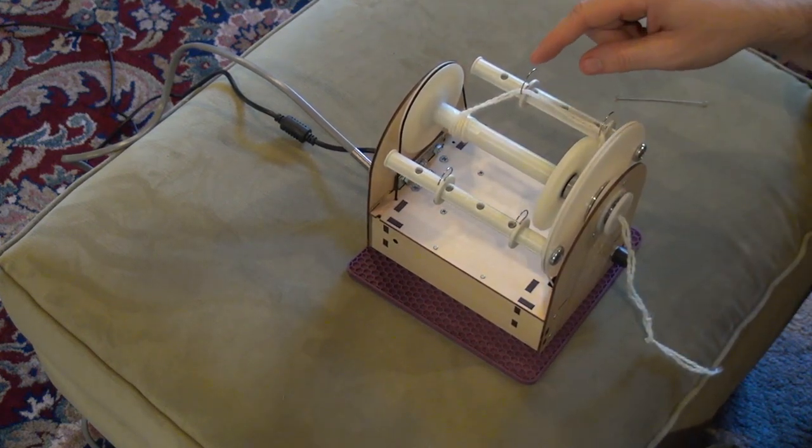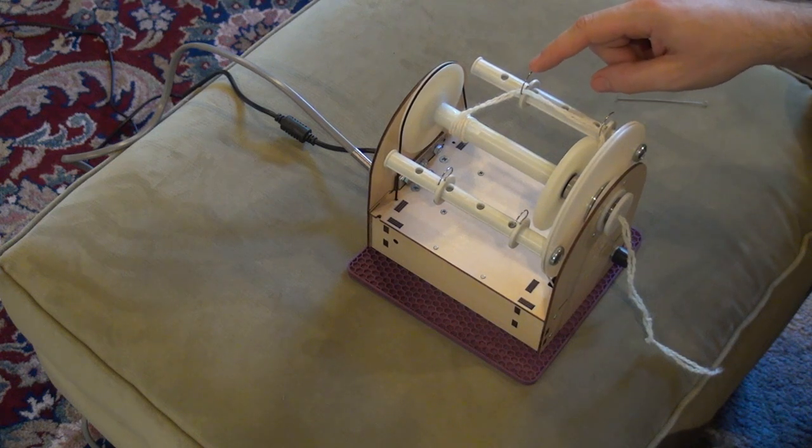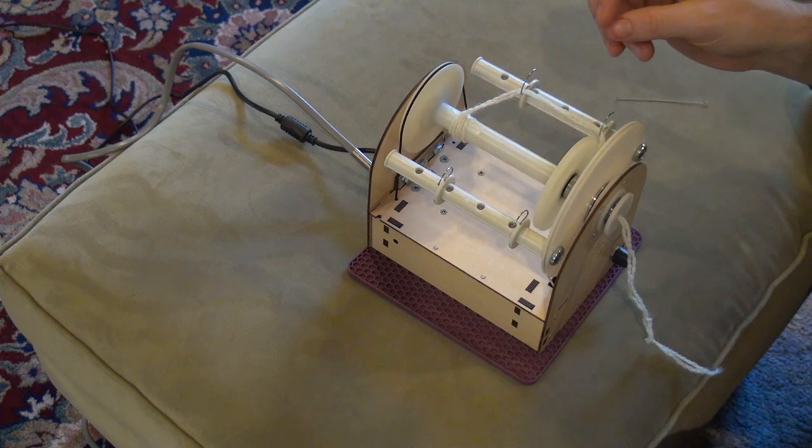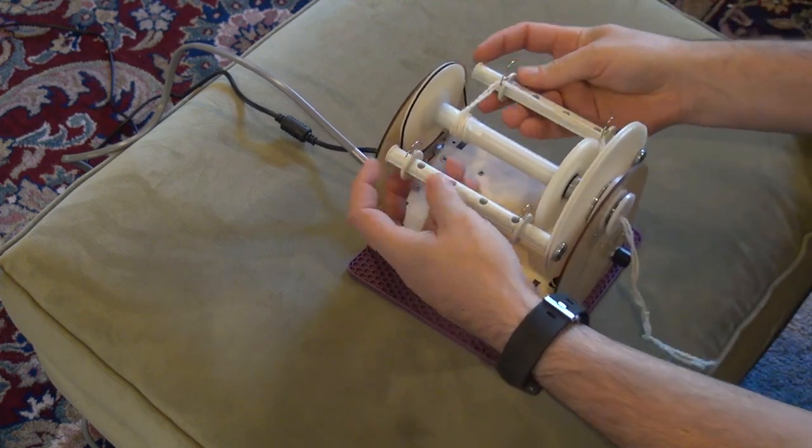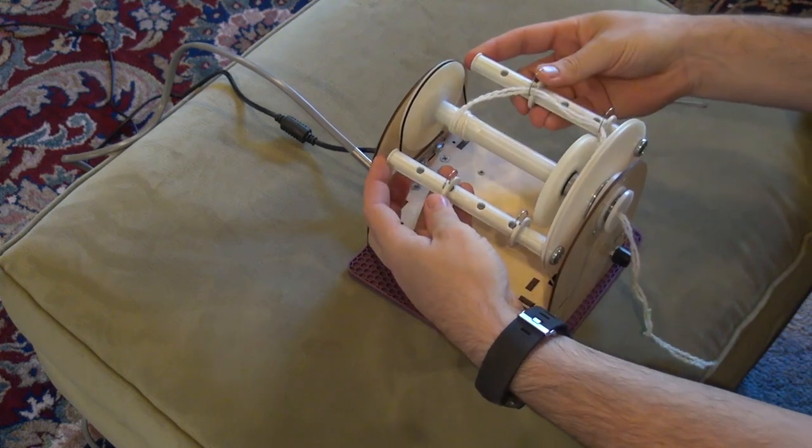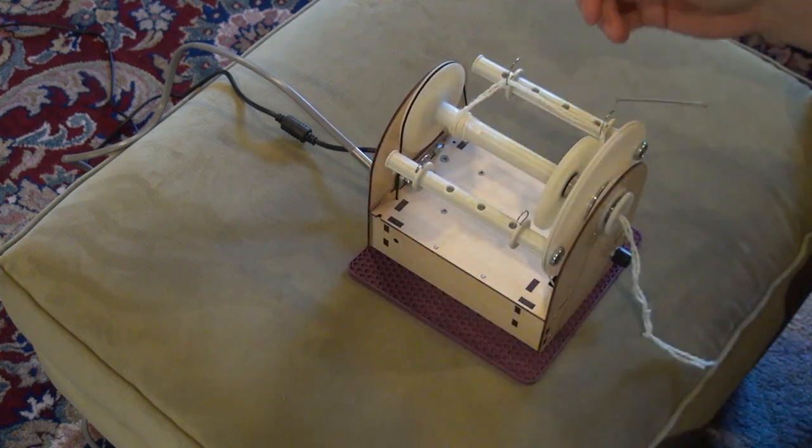One thing I will mention is because of the higher speed of the Electric Eel Wheel 5.2, at the highest speeds you'll start to get a little wobble. If you put these yarn hooks directly across from one another you'll reduce the amount of wobble.